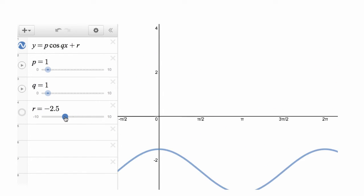And if the value of R goes negative, the whole graph moves down. So this R at the end just tells you how far above or below the x-axis the original graph has moved. So that's the effect of changing each of these individual values, P, Q, and R. So let's go back to the question now.